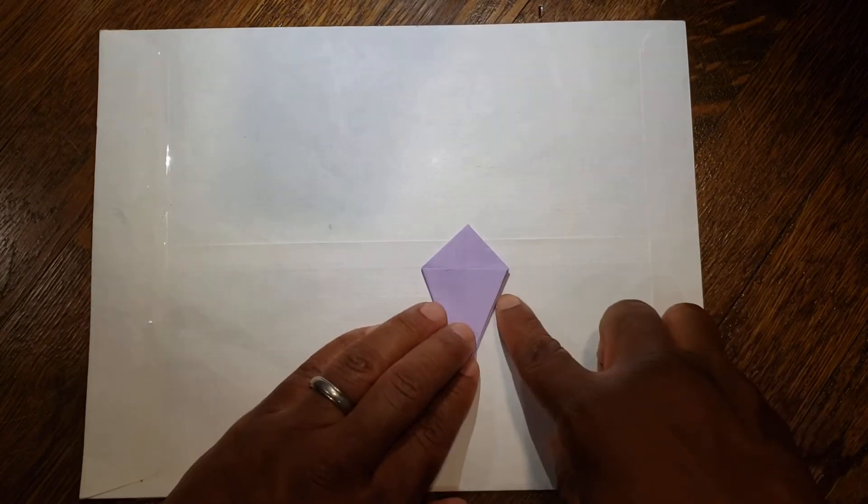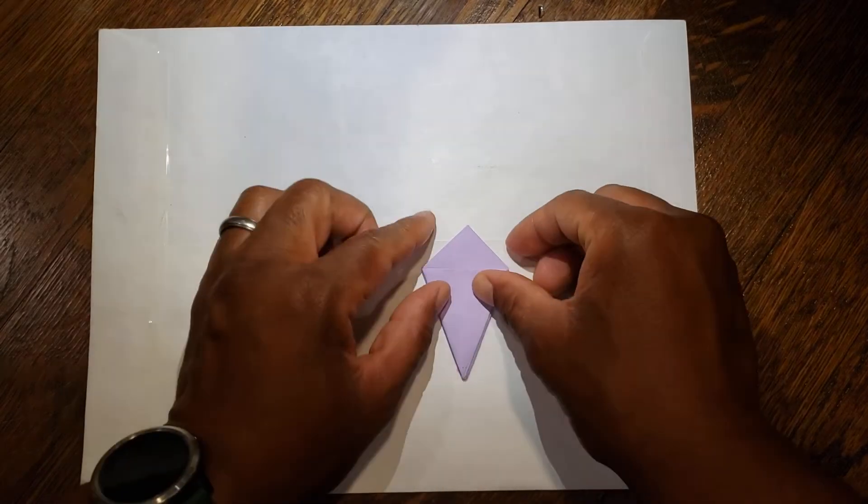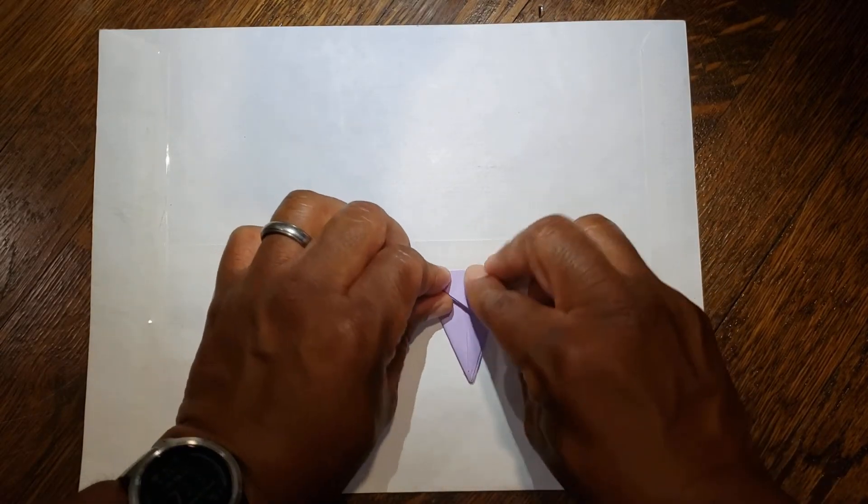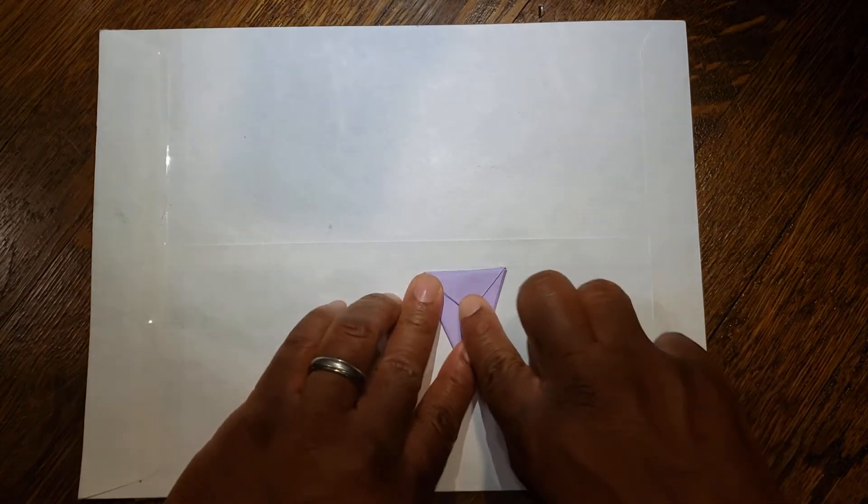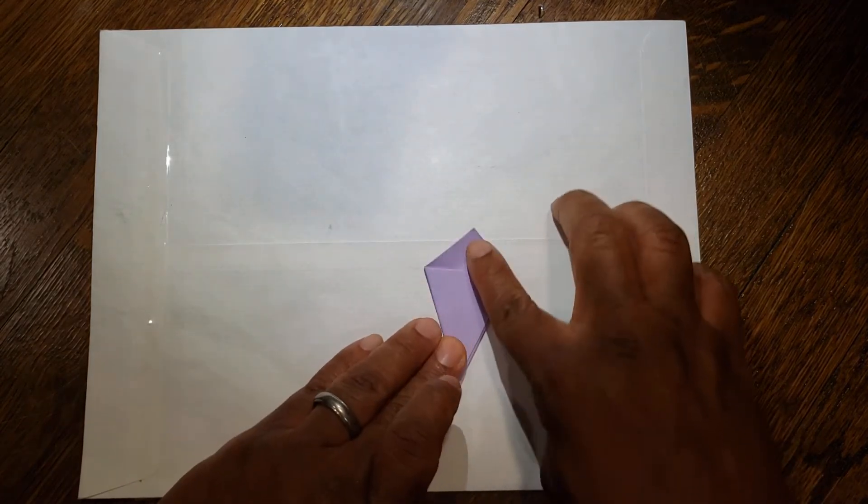Now we have our kite shape. Using this horizontal line as our guide, we're going to take this top triangle and fold it down, and then unfold it to the top.